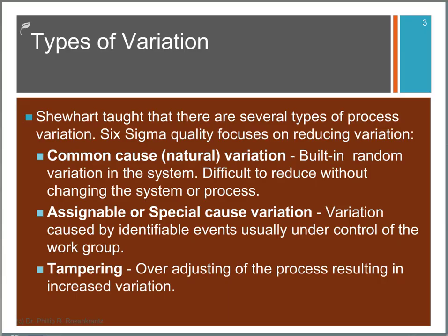Shewhart taught that there are three types of variation, and Six Sigma is all about reducing variation. So this is very important. The first type is Common Cause variation. This is the built-in random variation in the system, which is difficult to reduce without changing the system or the process itself. Typically workers aren't responsible for the overall system or the processes that they're using. So this is definitely the management aspect of reducing variation.